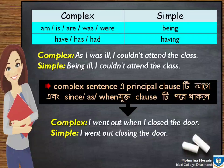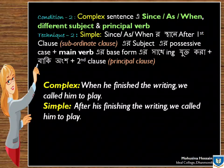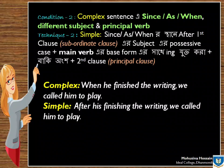যেমন, 'I went out when closed the door' এটি হয়ে যাবে: 'I went out, closing the door.' Second condition তে পূর্বের মতোই Complex Sentence এ Since/As থাকবে, কিন্তু এক্ষেত্রে subject ভিন্ন। যদি Complex এ subject ভিন্ন হয়, এবং verb টি Principal verb হয়, তখন Simple করার সময় Since/As এর পরিবর্তে 'After' হবে, subject এর possessive form হবে, এবং verb এর base form এর সাথে -ing যোগ হবে। আর Principal Clause এর কোনো পরিবর্তন হবে না। For example: 'When he finished the writing, we called him to play' হয়ে যাবে: 'After his finishing the writing, we called him to play.'